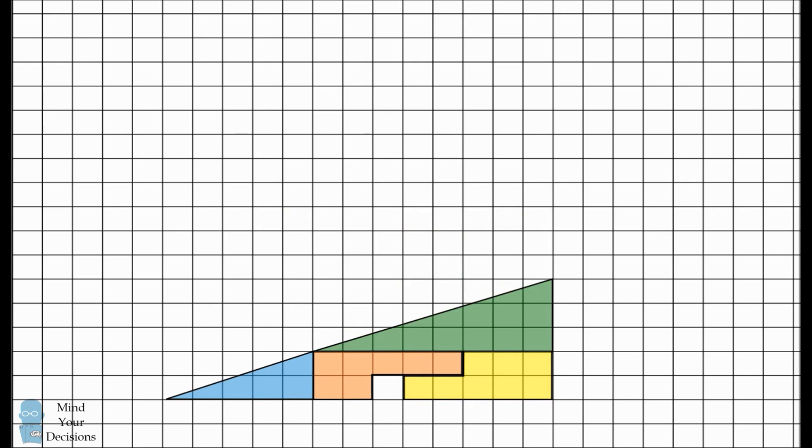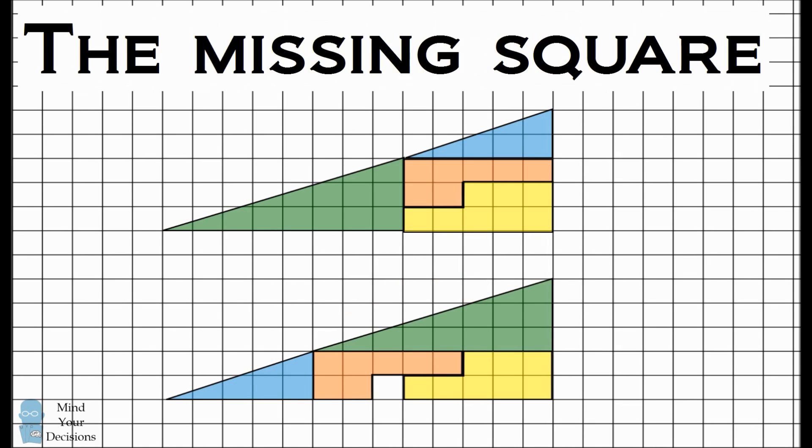We have now essentially reconstructed the same triangle with the same dimensions, but we have a clear problem. There's a missing square in this new triangle.